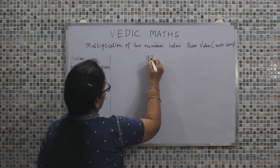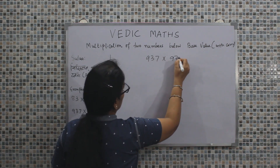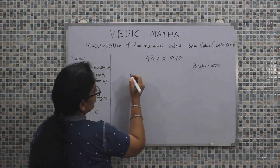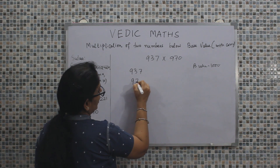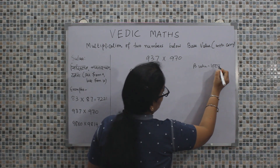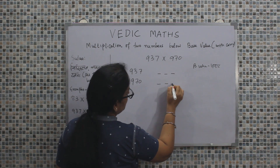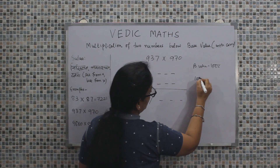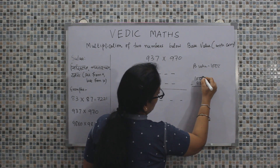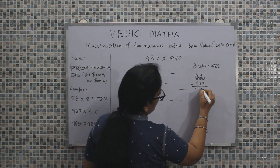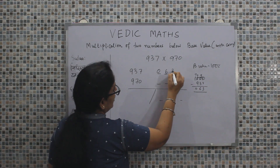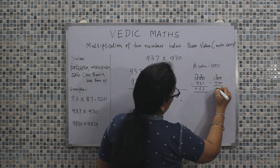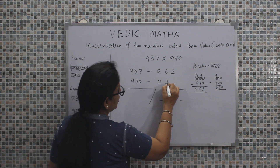Taking the next example: 937 into 970. The base value here will be 1000 because both the numbers are close to 1000. Taking the first value 937 and the second value 970, the number of places will be 3 since the base value has 3 zeros. Using Nikhilam, we subtract from 1000: 1000 minus 937 gives 63, so it is minus 63. 1000 minus 970 gives 30, so it is minus 30. Both numbers are deficient, so we use minus signs.